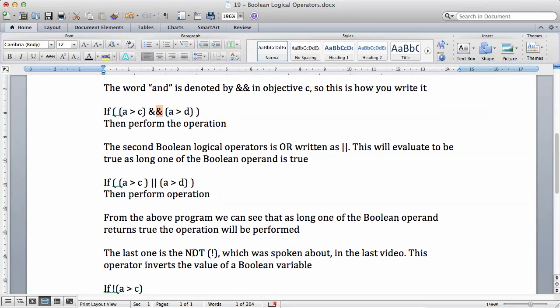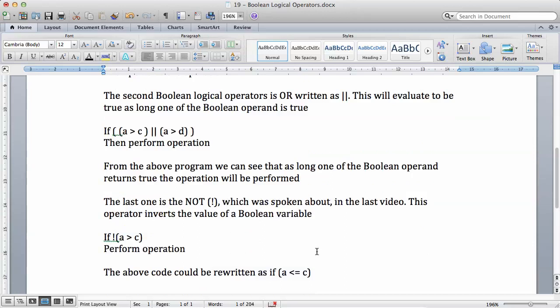The last one is the NOT, which I told you in the previous video, which is the exclamation mark, which was spoken about. This operator inverts the value of a Boolean variable. So if a is greater than c, if a is not greater, so basically if you say a is greater than c, then you negate it. You're basically saying if c is greater than a. But anyway, you can invert any operation.